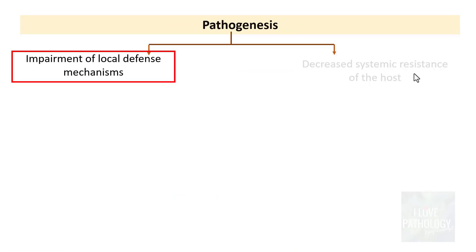Community-acquired viral pneumonia in the pre-COVID era was predominantly caused by respiratory syncytial virus, influenza, and parainfluenza viruses. After the COVID pandemic, coronavirus has become the predominant virus in community-acquired viral pneumonia, though respiratory syncytial virus, influenza, and parainfluenza viruses remain relevant.